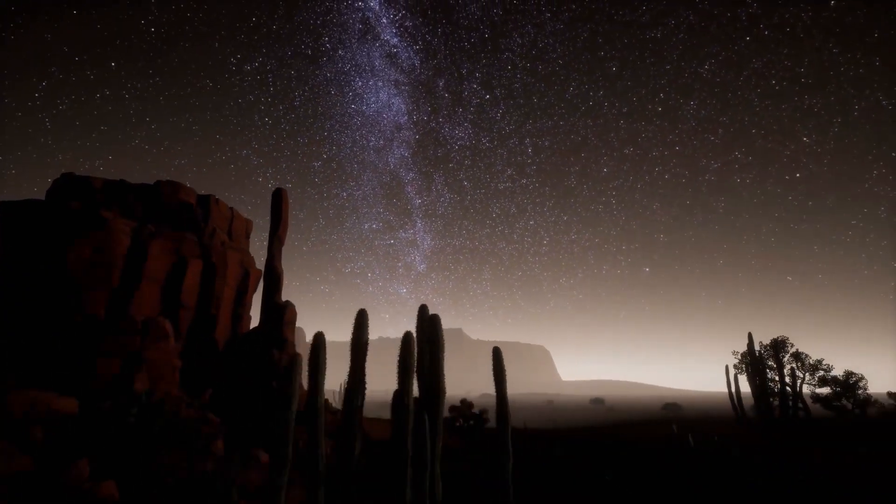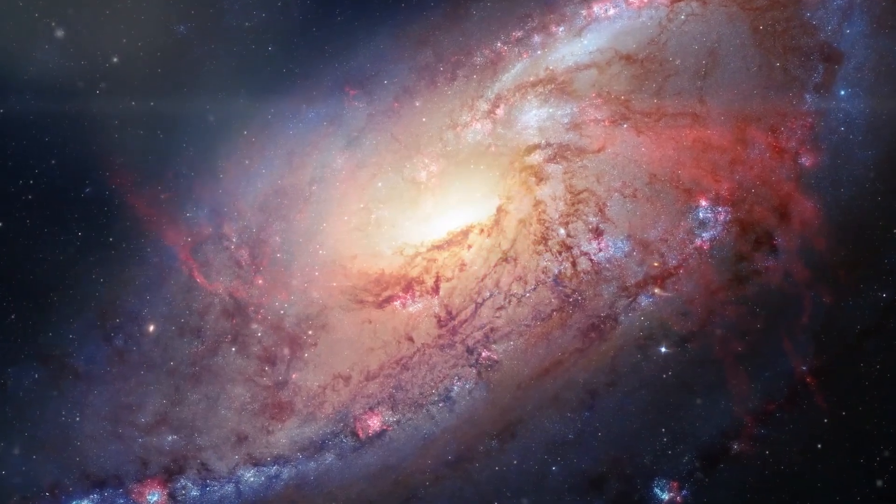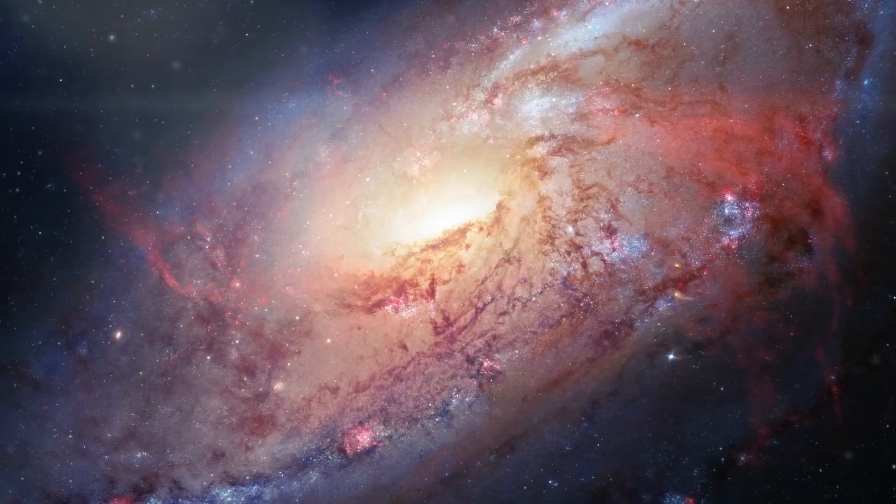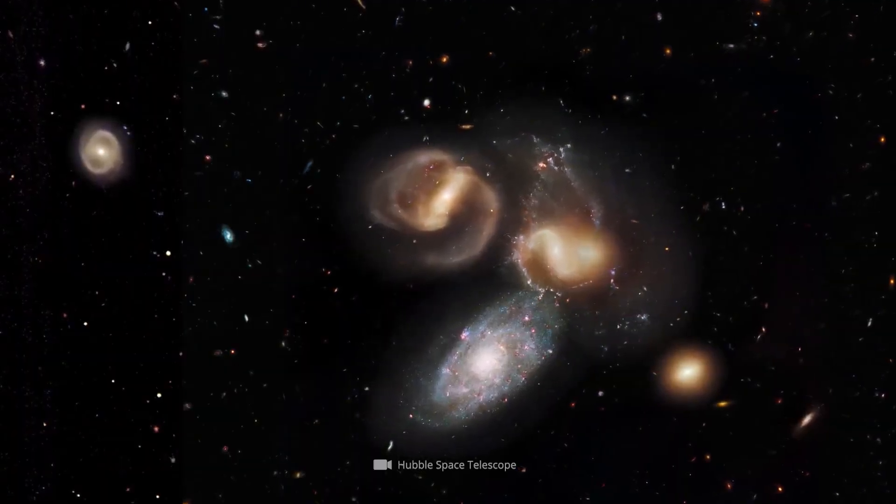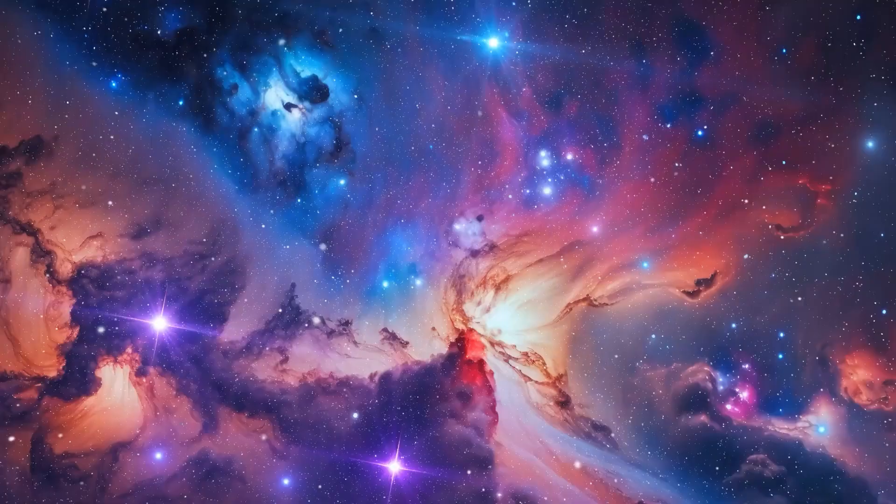In recent years, astronomers have identified thousands of exoplanets orbiting distant stars. Many of these planets exist within the habitable zone, the region around a star where conditions might be right for liquid water and potentially life to exist.